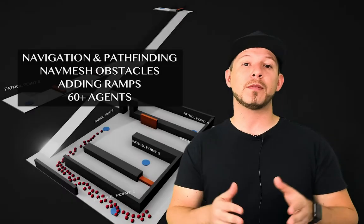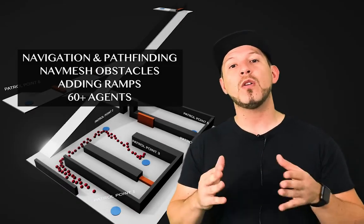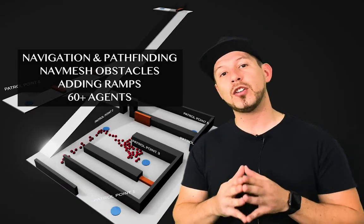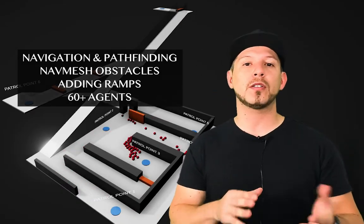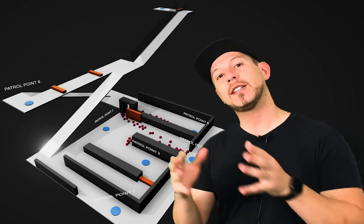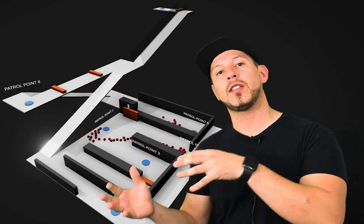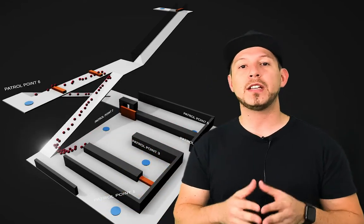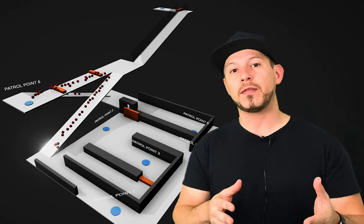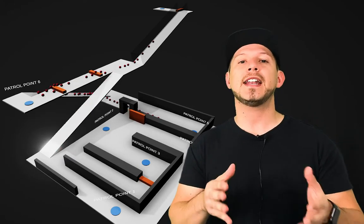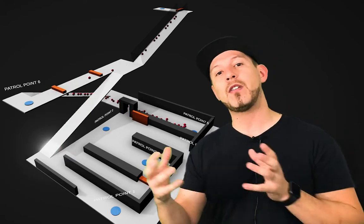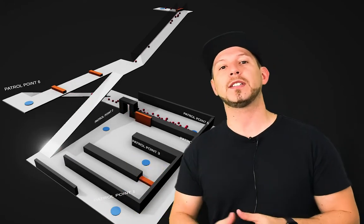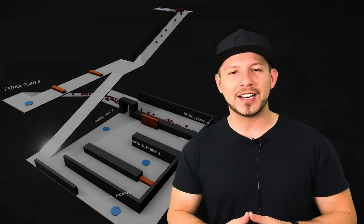Today I'm pretty excited because I'm going to continue the videos on navigation and pathfinding. We're going to be using a new component called the NavMesh Obstacle that is going to tell our agents that there are moving objects within the scene. I'm also going to be introducing a lot of different agents, different ramps and objects in our scene. So let's jump into Unity and start working on it.